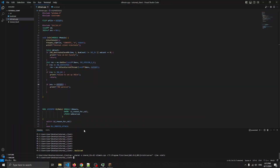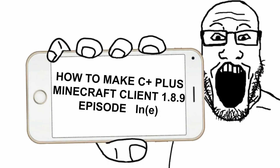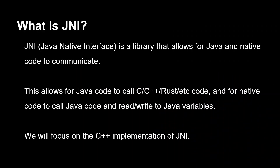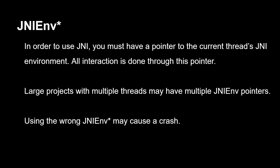Now let's go over how JNI is actually used. JNI is the Java Native Interface — it's a library for Java native code to communicate. It allows Java code to call C and C++ code, and native code can call Java code and write to Java variables. To use JNI you need a pointer, which is unique to every single thread. A large project with multiple threads will have multiple JNI env pointers, and you always have to use the right one or you might crash.